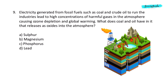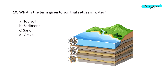Question 9. Electricity generated from fossil fuels such as coal and crude oil to run industries leads to high concentrations of harmful gases in the atmosphere, causing ozone depletion and global warming. What does coal and oil have in them that releases as oxides into the atmosphere? Option A: Sulphur.